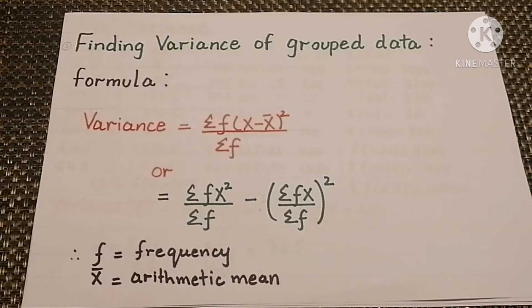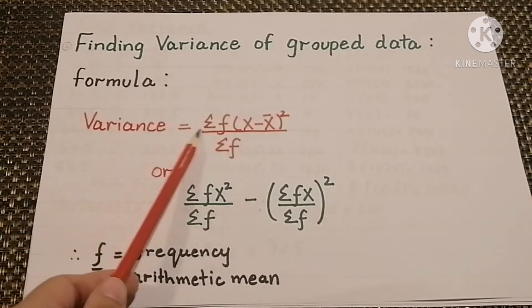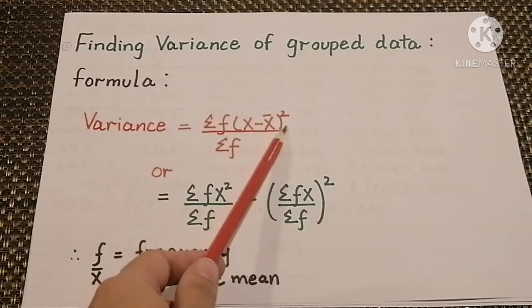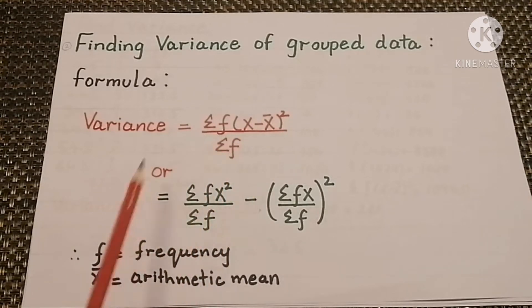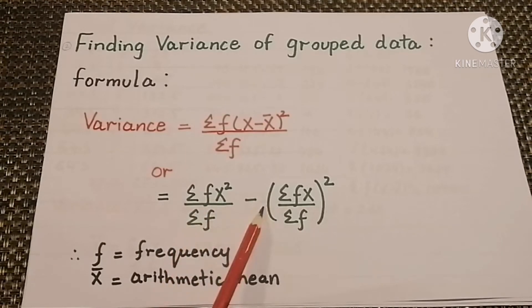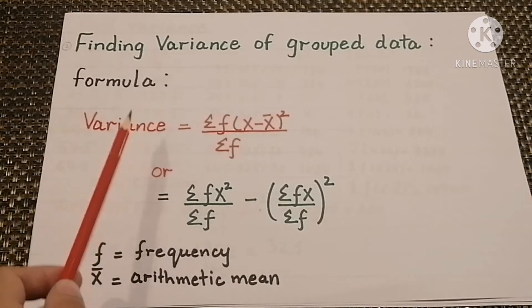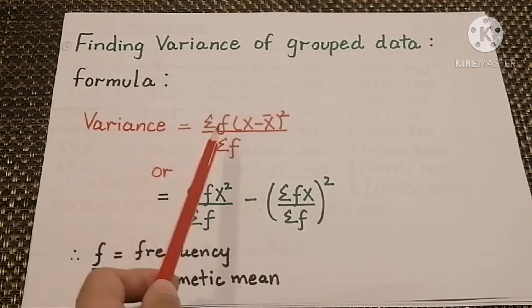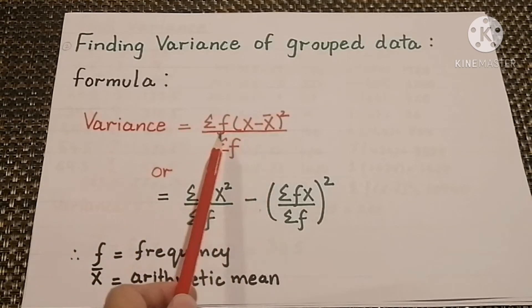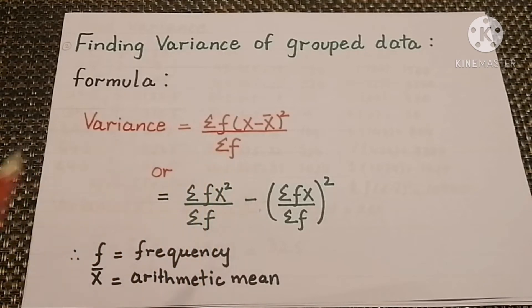Finding variance for grouped data. The formula for variance is: variance equals sum of f(x minus x̄)² divided by sum of f, or equivalently sum of fx² divided by sum of f minus (sum of fx divided by sum of f)². Here f is the frequency and x̄ is the arithmetic mean. We will solve a question using the formula: variance = sum of f(x minus x̄)² divided by sum of f.